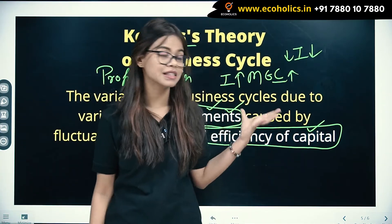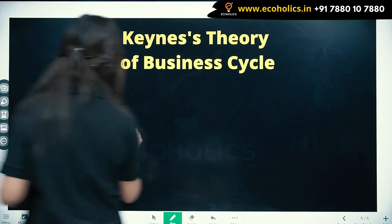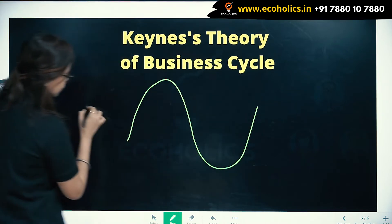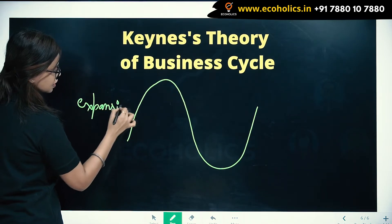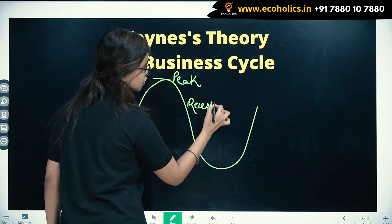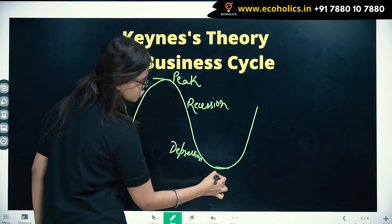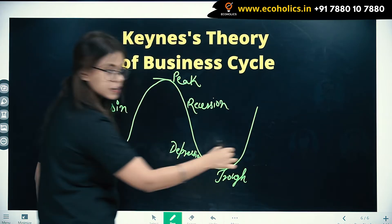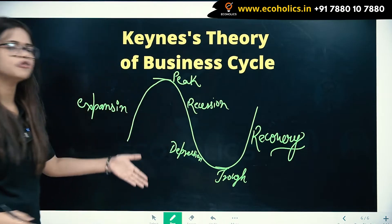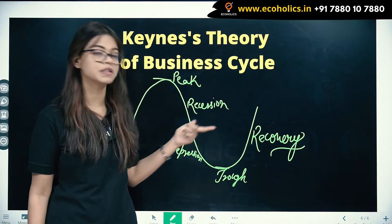Let's move further and understand how we can relate this to the business cycle. Let's draw a business cycle. The four phases of the business cycle are: expansion, then you reach the peak, then you start falling — this is recession, then depression where you hit the bottom and touch the trough. And then there is the recovery phase.